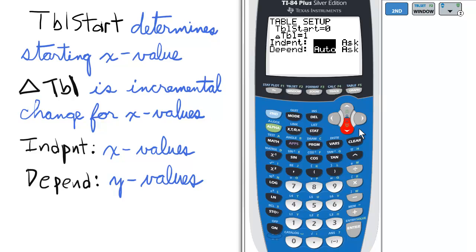Next, the option is for auto or ask for the independent and dependent variable values. Basically, the x value is the independent variable and the y value is the dependent variable. The default setting is auto, which will start the x values with a selection from table start.